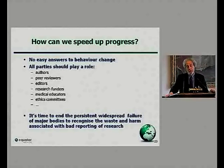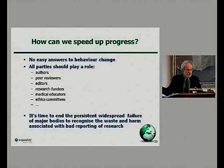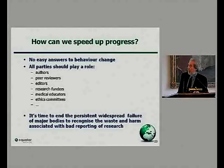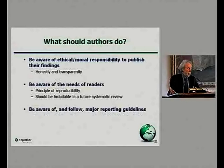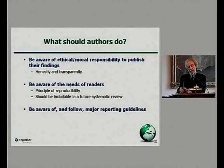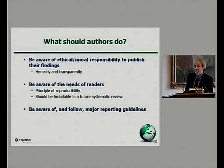It's not easy to change people's behavior, especially when there's no obvious self-interest in doing so. I think all parties should have a role. Major bodies — funders, educators, research organizations — should recognize this is a problem and try to do something about it. Authors should be aware of their ethical and moral responsibility to publish findings honestly and transparently. They need to realize they're writing the paper for readers — the purpose is communication, not simply publication — and they should recognize the needs of future systematic reviewers and follow reporting guidelines.